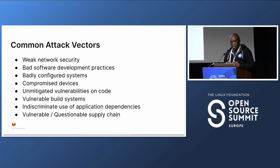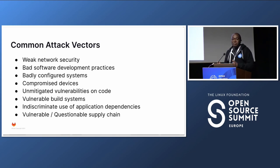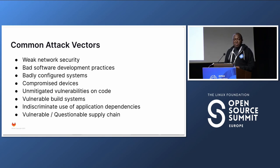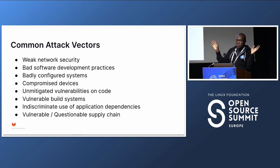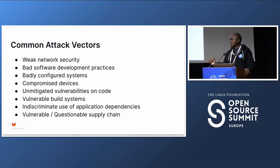Compromised devices — spyware and malware can infect laptops and other devices, not just build systems. There used to be viruses that automatically added malicious JavaScript to HTML files right from your local machine. Unmitigated vulnerabilities in your code or programming language, vulnerable build systems, and indiscriminate use of dependencies are also attack vectors. You find a random Docker image that does what you want, but are you aware of everything inside the container or the layers of images it contains?